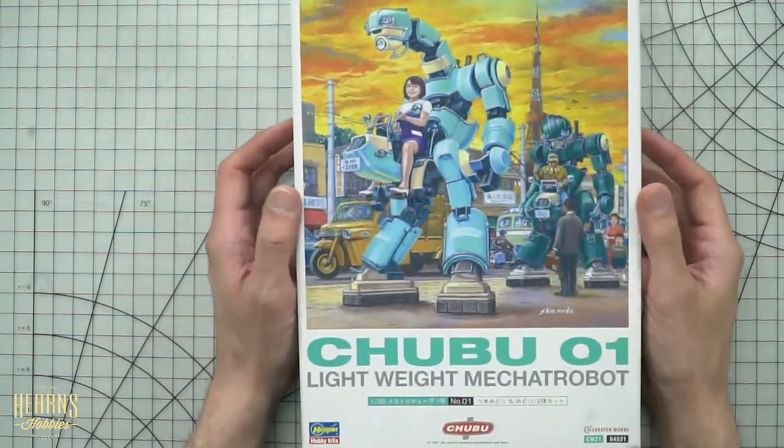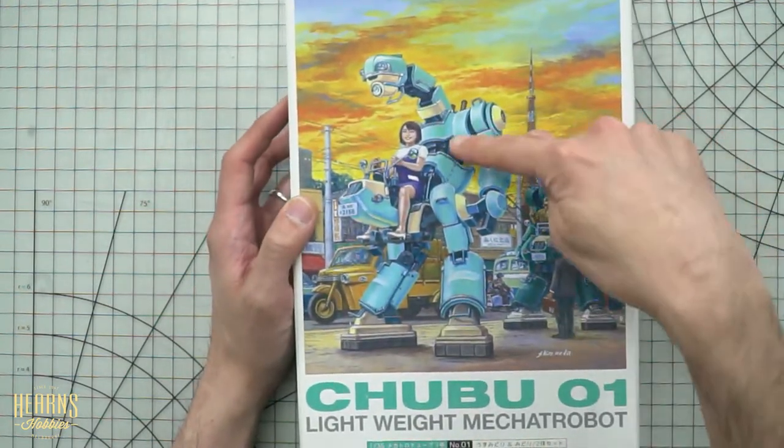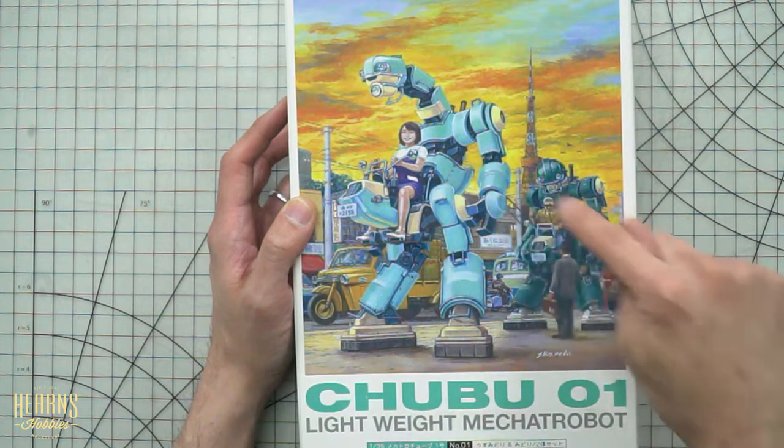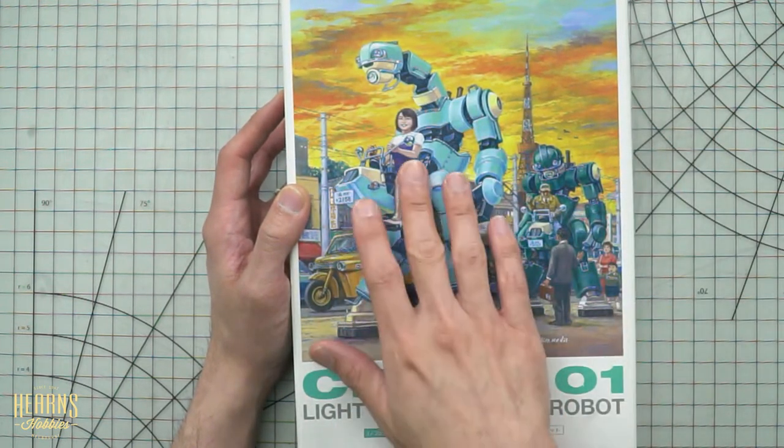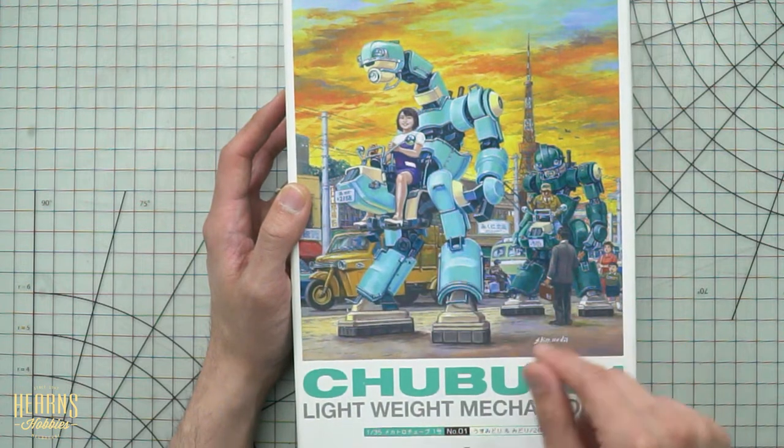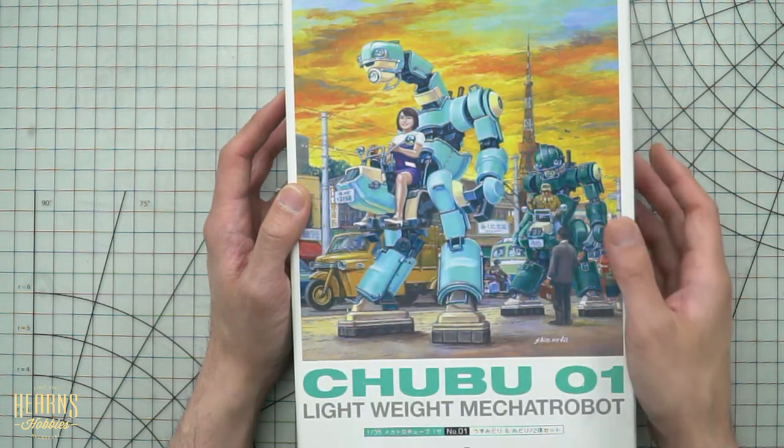So here we go Chubu 01. So you've got two shown within here. And it's actually this version that you're going to be getting. So it has a female pilot and it's in this particular color.